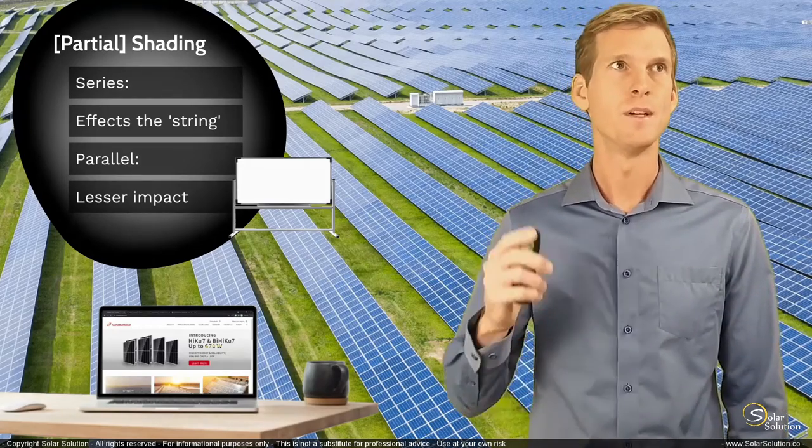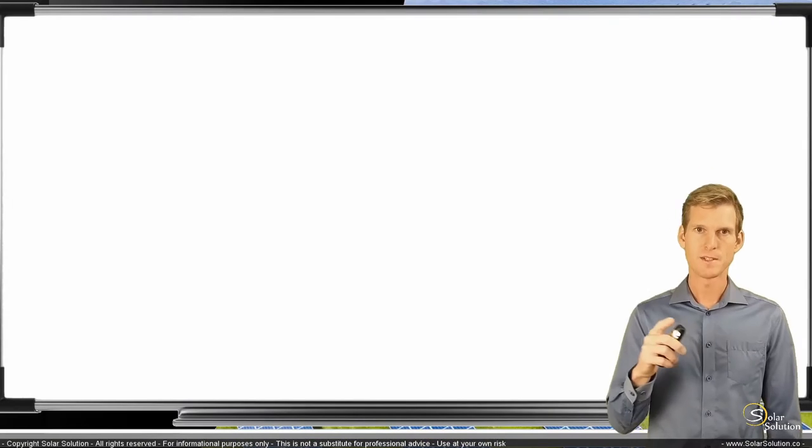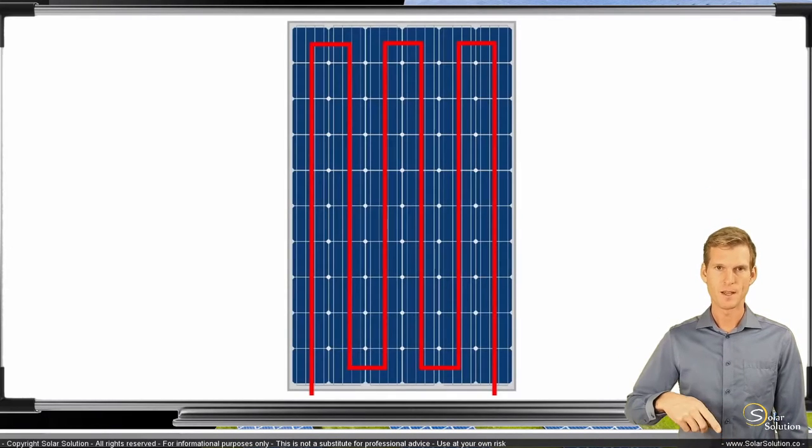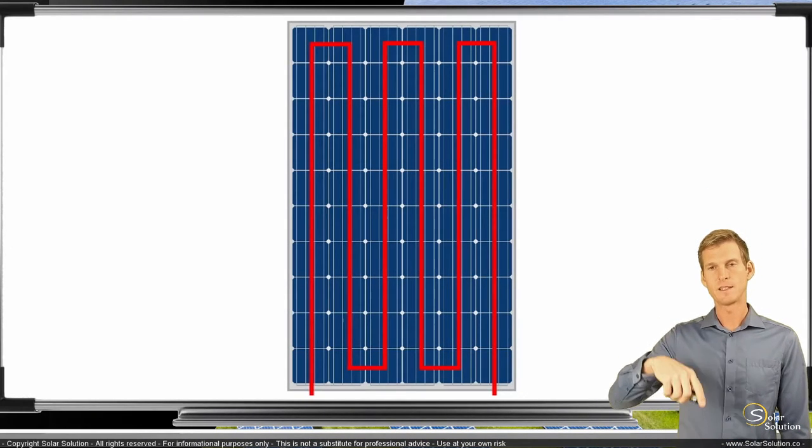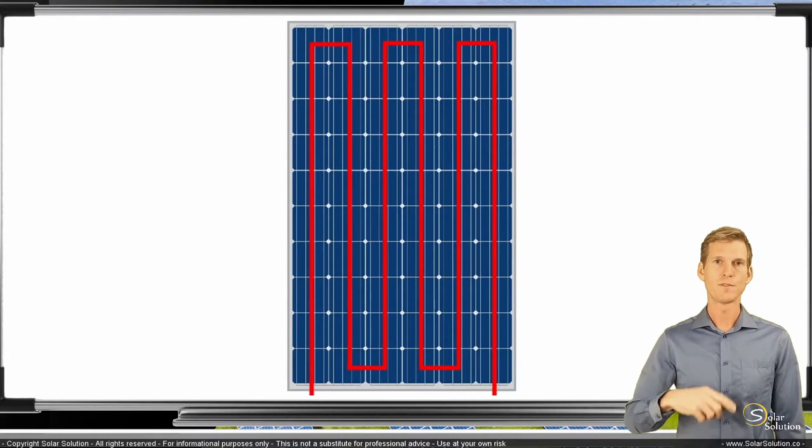Let's take a theoretical photovoltaic module which has 60 cells combined in series. There's 6 times 10 cells and all of the 60 cells are connected in one continuous string, in one continuous circuit, so they're all connected in series.